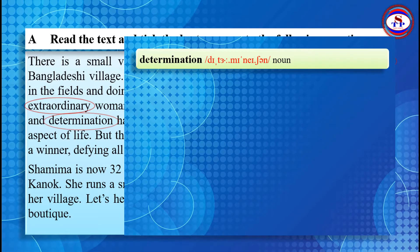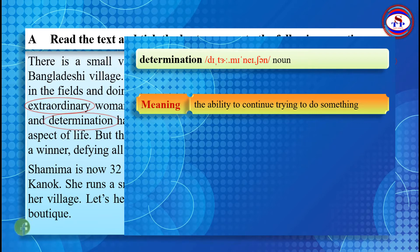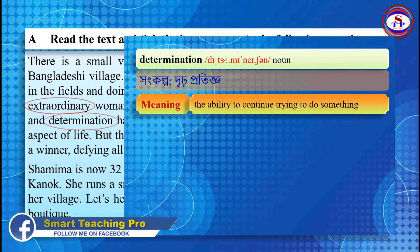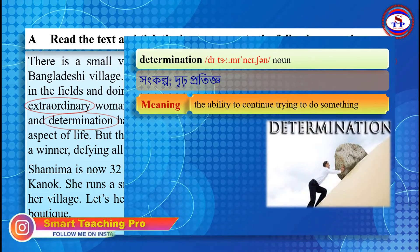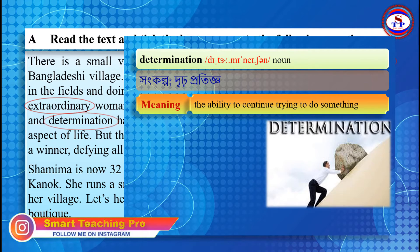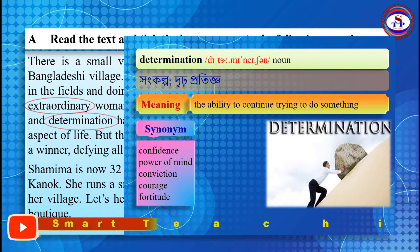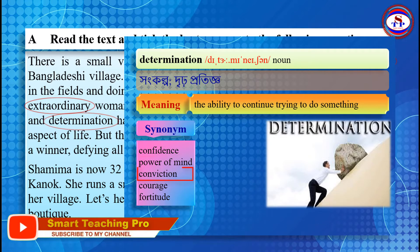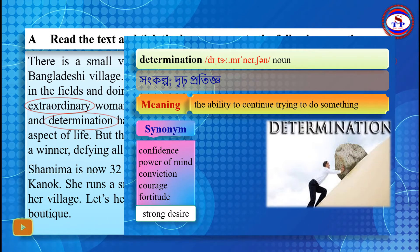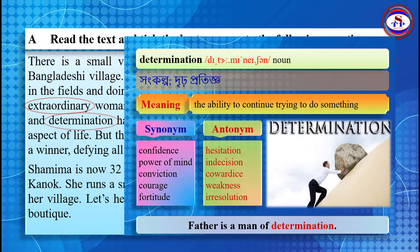The word 'determination' is also a noun. That means the ability to continue trying to do something. Here you can see in the picture that someone is trying to do something that is not easy — this can only be done by someone who has the ability to keep trying. The synonyms of determination are: Confidence, Power of Mind, Conviction, Fortitude, and Strong Desire. The antonyms are: Hesitation, Indecision, Cowardness, Weakness, and Hesitation. Look at the example: Father is a man of determination.